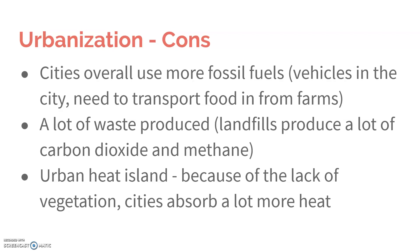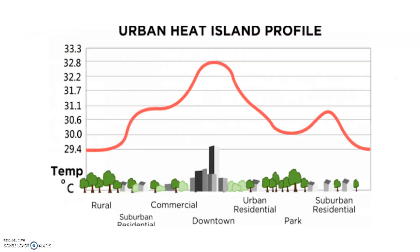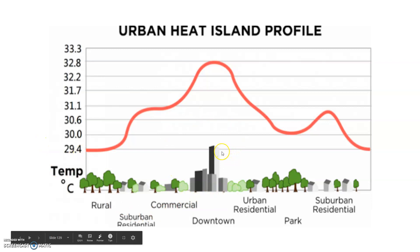Along with the waste, we've seen a lot of issues with cities having to contend with water pollution and air pollution. Another issue is the urban heat island effect, and that's due to lack of vegetation. Cities absorb a lot more heat. We can actually see that if we graph the temperature in an urban area and the surrounding suburb and rural areas.